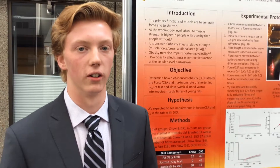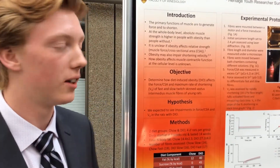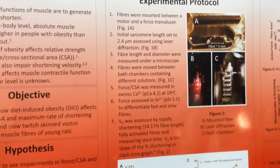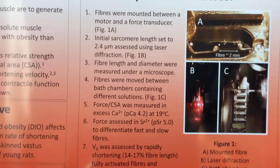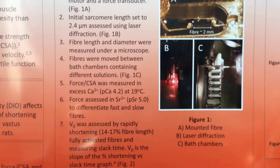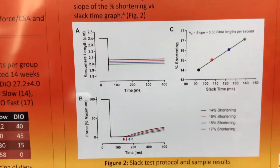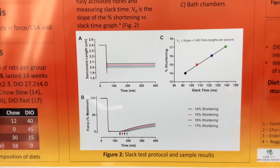The maximum rate of shortening, or V0, was assessed by a SLAC test. In a SLAC test, a fully activated fiber is rapidly shortened to percentile points of that fiber. For our study, we used 14 to 17 percent lengths. This rapid shortening causes the fiber to go slack. The muscle fiber then shortens to take up this slack, which generates force. The time it takes for force to begin to rise, along with the percentile length that the fiber is shortened at, allows us to determine the maximum rate of shortening.